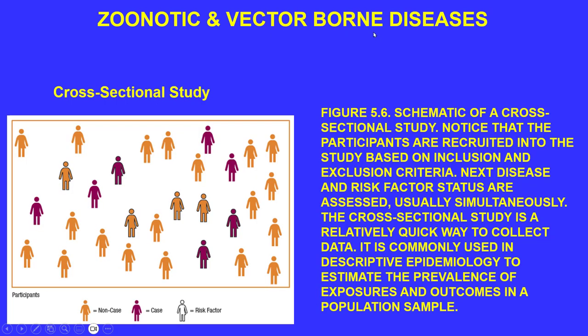This schematic shows a cross-sectional study where persons are recruited based on inclusion or exclusion criteria. Disease and risk factor status are assessed simultaneously. It's a relatively quick means of collecting data, allowing for estimates of the prevalence of exposures and outcomes in a population sample.